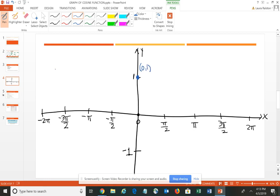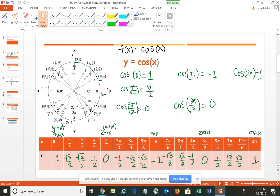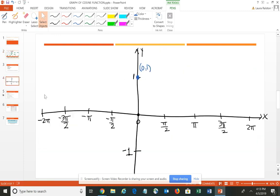Then looking at the next quadrantal angle, when X is pi halves, Y is 0 – so I have pi halves, 0. At pi, we had a value of negative 1 – you can double-check the table. 3 pi halves, it was 0 again. And then at 2 pi, we were back at 1.